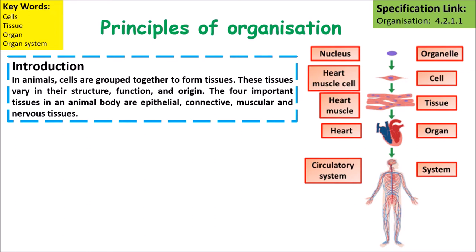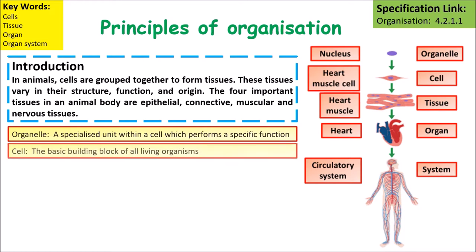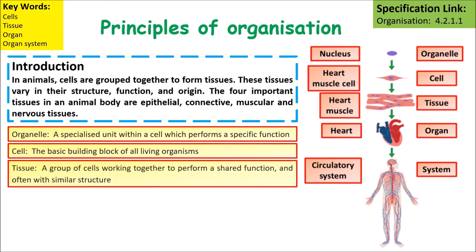In animals, cells are grouped together to form tissues, and these tissues vary in their structure and function. There are four main types: epithelial tissue, connective tissue, muscular tissue, and nervous tissue. Going from the smallest to the largest, we have organelles — specialist units within cells that perform a certain function — then cells, which are the basic building blocks of all living organisms.